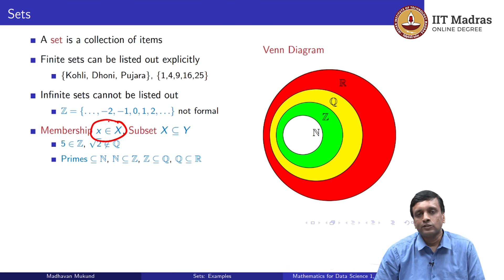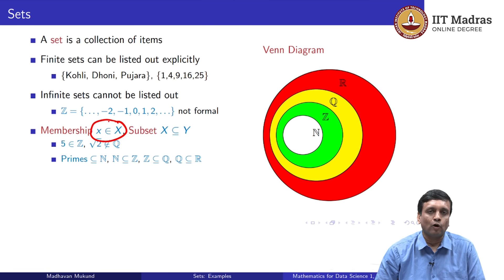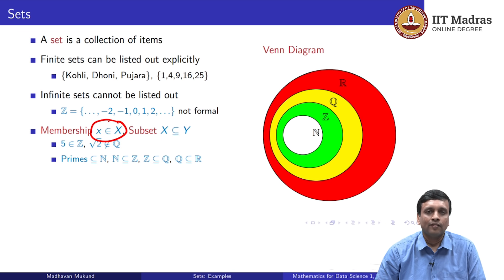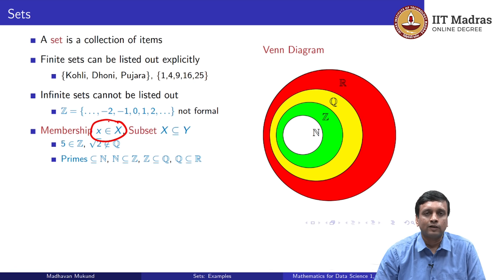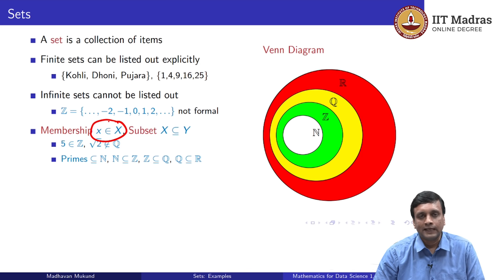We draw this using Venn diagrams, where we draw ovals, circles, or boxes representing the extent of a set — it is a picture of a set. Depending on whether a box sits inside another box or intersects it, that indicates whether the first set is a subset of the other or they overlap. In this diagram, we have indicated the subset relationship between the naturals, the integers, the rationals, and the reals.